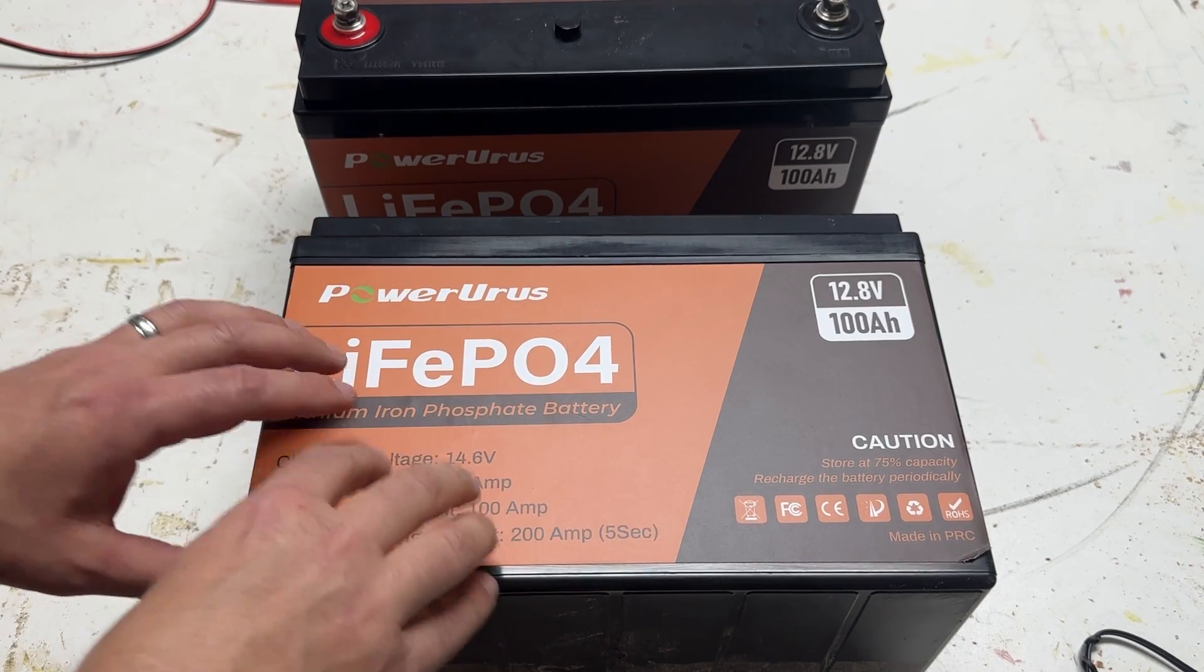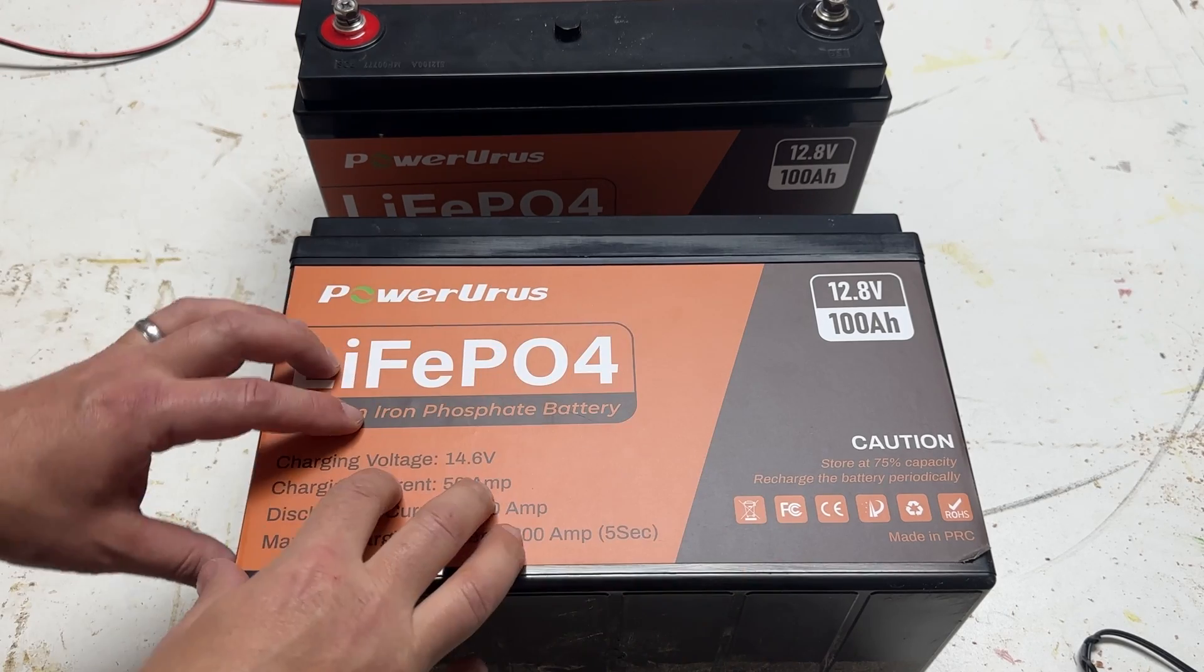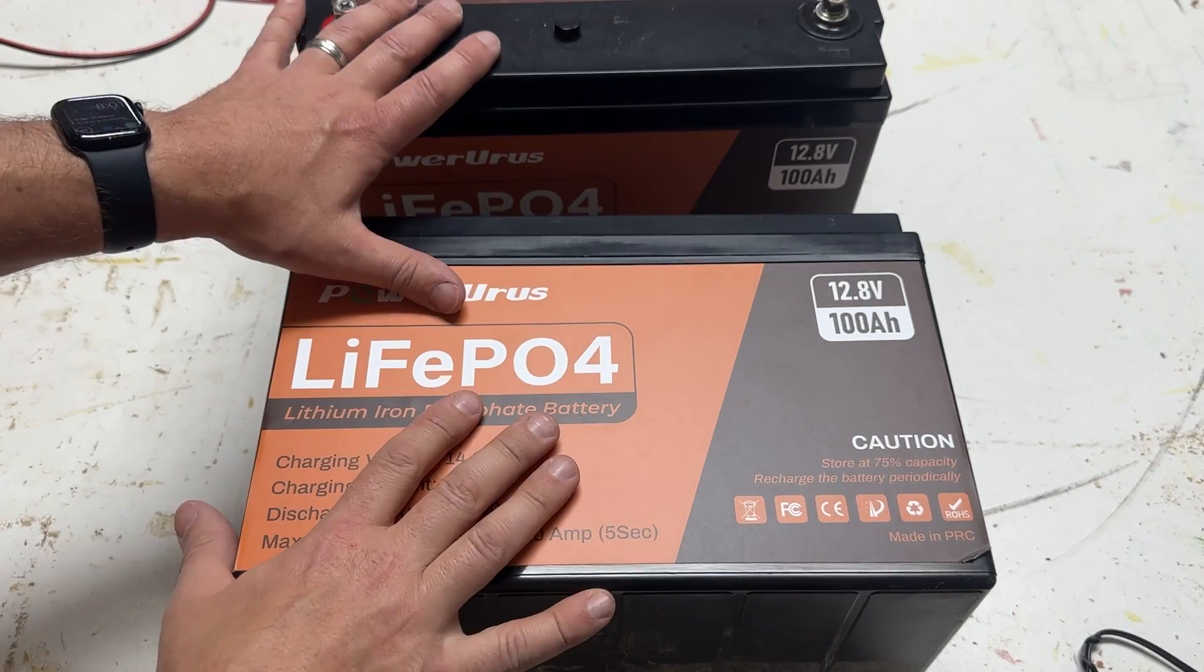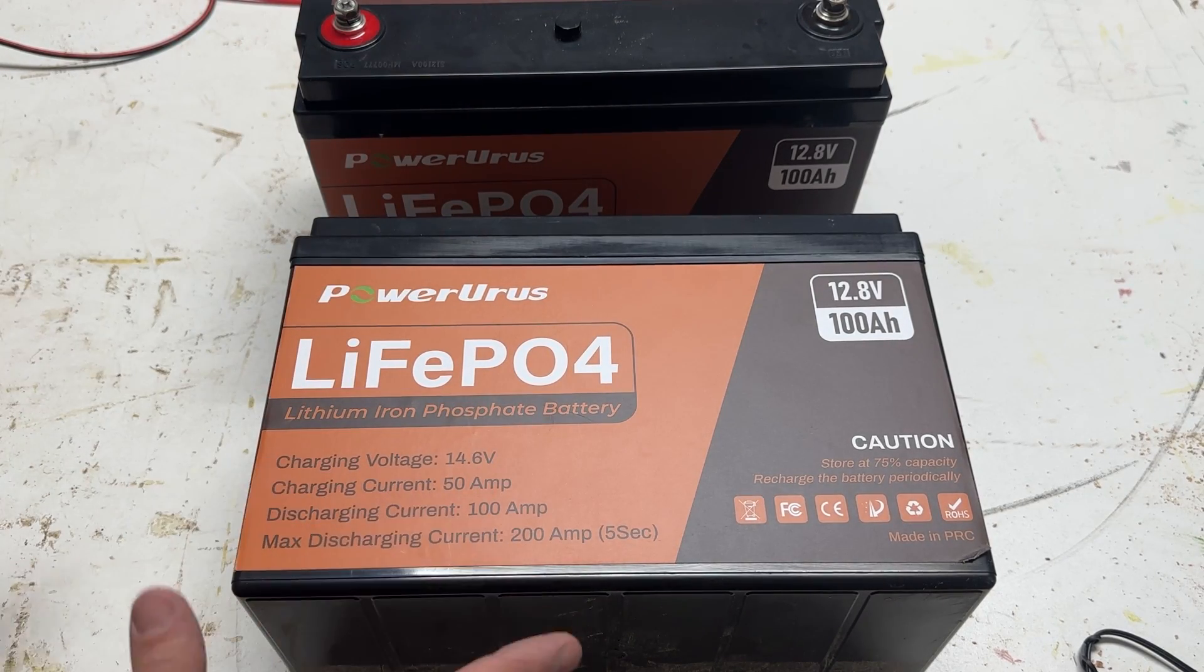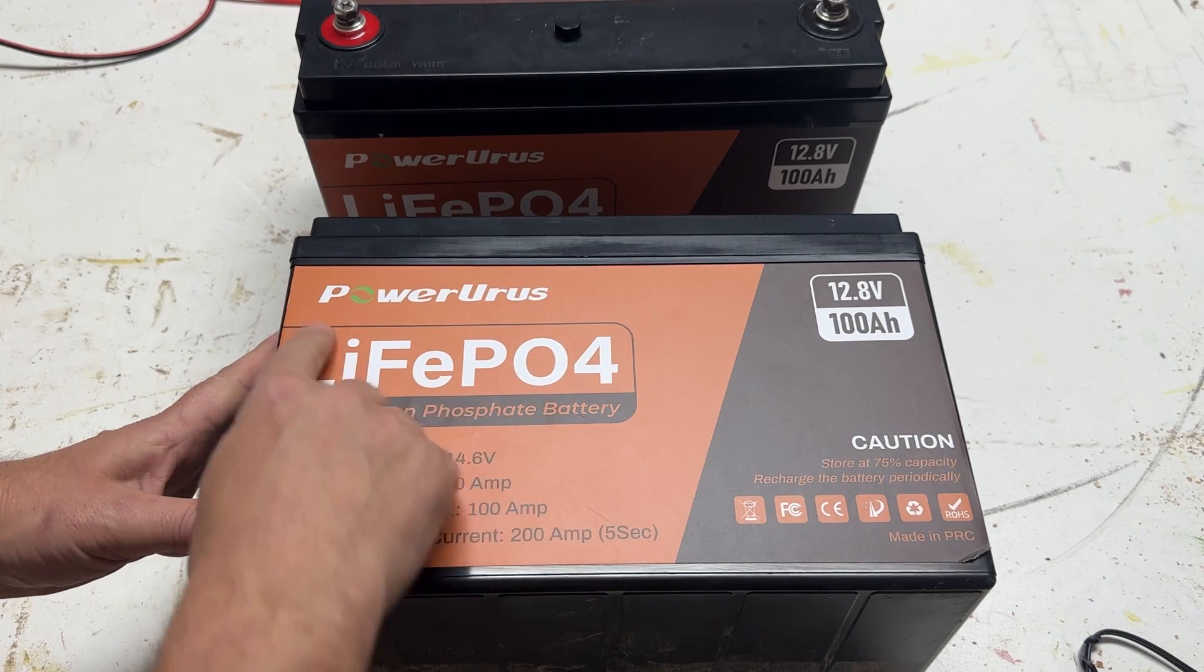They have about 10 times the life, the capacity, the number of cycles that you can run through these over a standard car battery, lead acid battery, or even your marine deep cycle batteries. They last much, much longer. They also have a bunch of electronics built in that helps to protect the batteries.